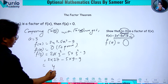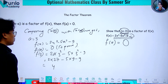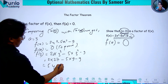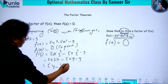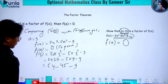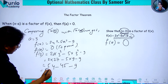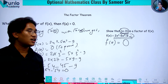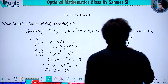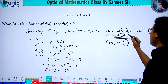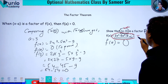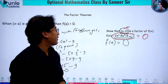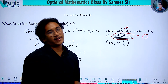2 into 27 is 54, minus 5 into 9 is 45, minus 9. So 54 minus 45 minus 9 equals 0. Since f of 3 equals 0, x minus 3 is a factor of f of x. This confirms the Factor theorem.